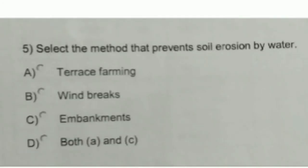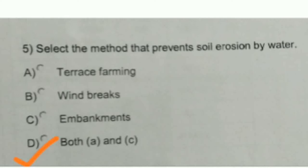Select the method that prevents soil erosion by water. A. Terrace forming, B. Wind breaks, C. Embankments, D. Both A and C. Correct option is D. Both A and C. Terrace forming slows down the speed of flowing water and thus reduces soil erosion by water.